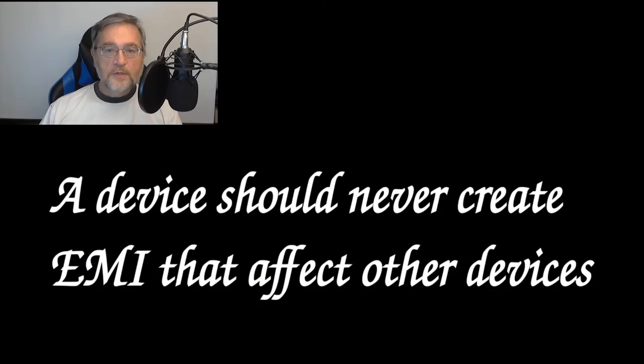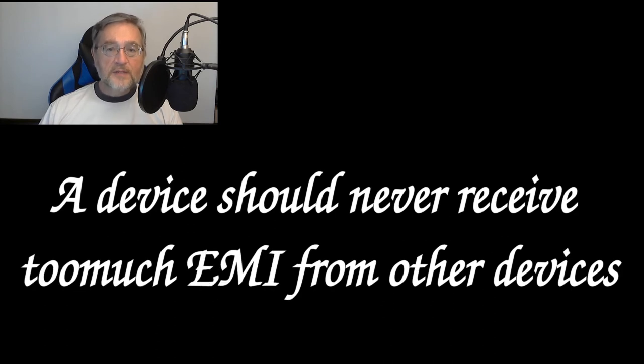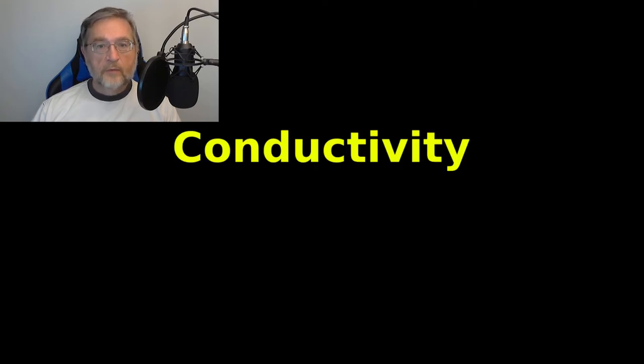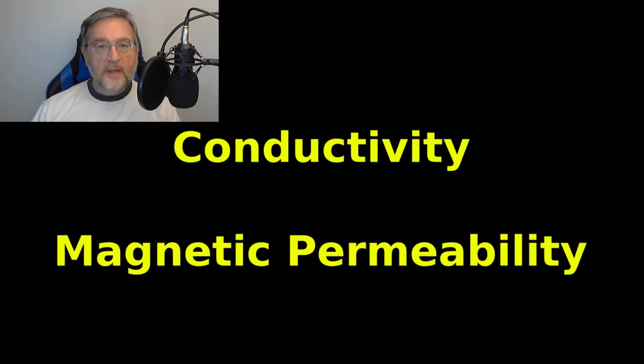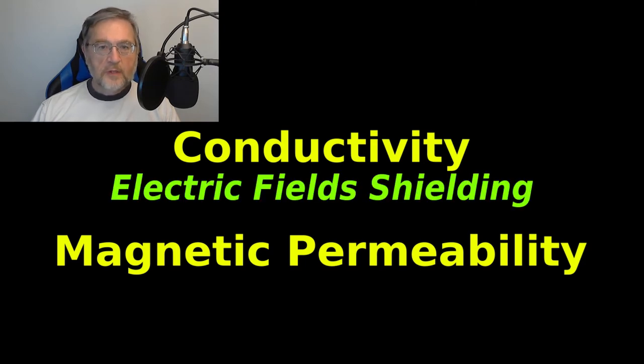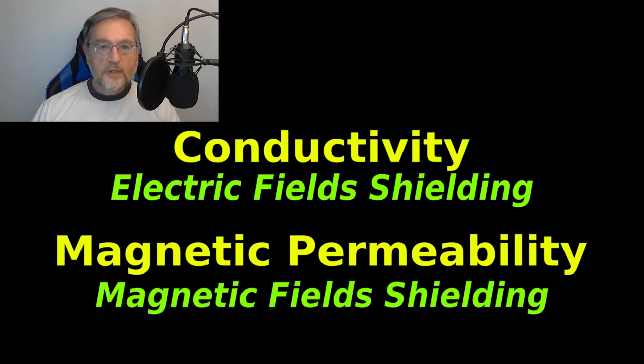Whenever we create a new device, we always need to make sure first that it will not cause EMI that can affect other devices, and second, that it will not receive too much EMI from the surroundings. The ability to create electromagnetic shielding depends on two different properties of materials: conductivity, which is the capability to allow the movement of electric charges, and magnetic permeability, which is the capability of some substances to facilitate the flow of a magnetic field through them. The permeability works for magnetism like conductivity works for electricity. Conductivity allows shielding from electric fields, and permeability allows shielding from magnetic fields.